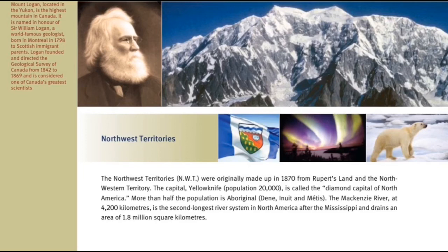Northwest Territories. The Northwest Territories, or NWT, were originally made up in 1870 from Rupert's Land and the Northwestern Territory. The capital, Yellowknife, with a population of 20,000, is called the Diamond Capital of North America. More than half the population is Aboriginal — Dene, Inuit, and Métis. The Mackenzie River, at 4,200 kilometres, is the second-longest river system in North America after the Mississippi, and drains an area of 1.8 million square kilometres.